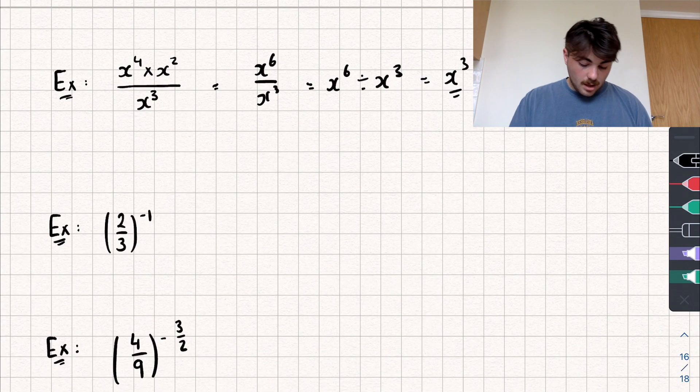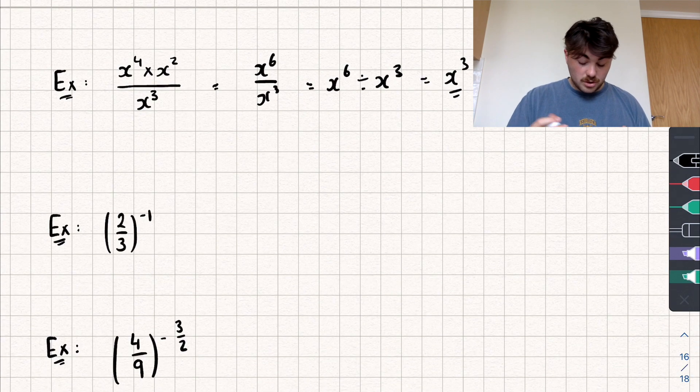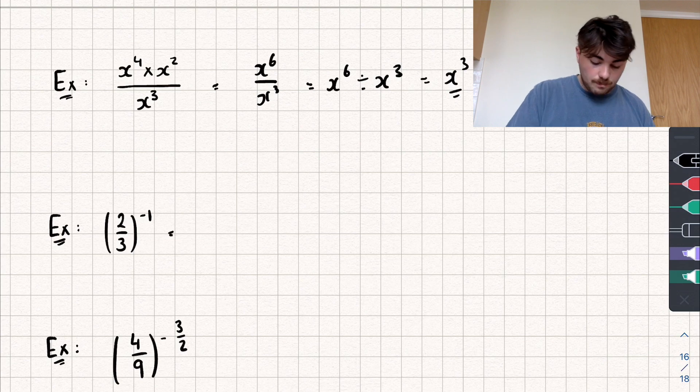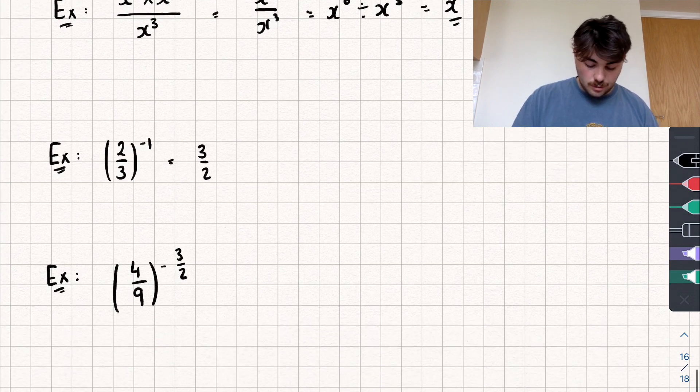Third example: two-thirds to the power of negative one. We just take the reciprocal, giving three over two.